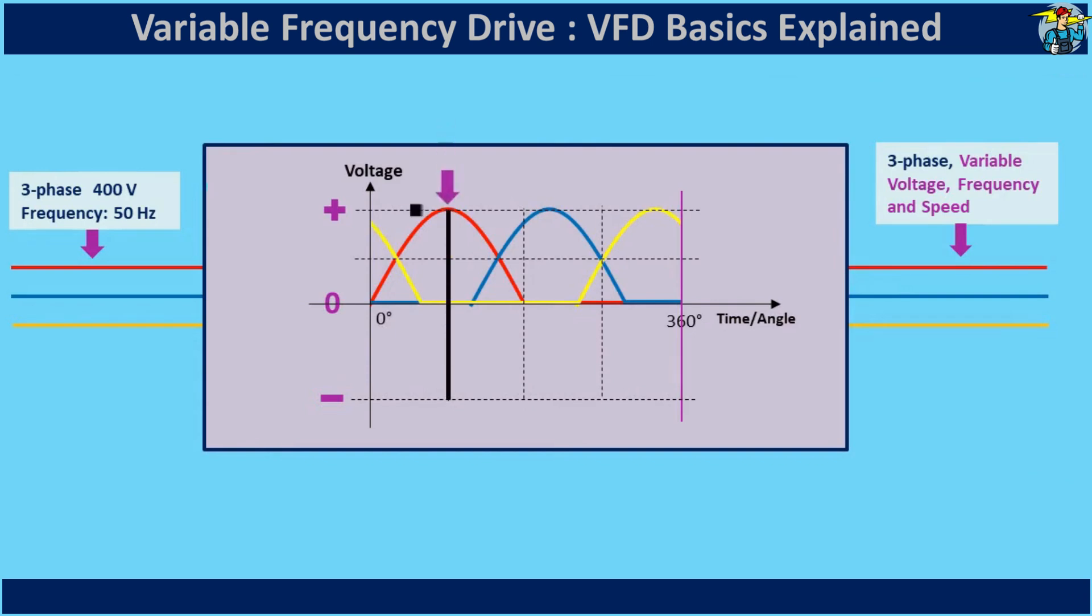After passing through the converter, we receive the positive portions of all three line voltages, or resulting currents, as a DC value. However, this output is not smooth, it contains ripples.